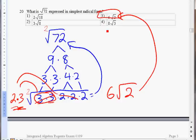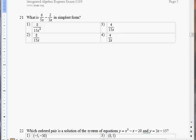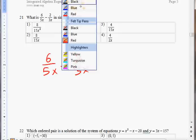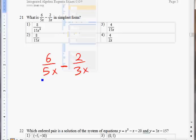Let's move on. Number 21. It says, what is 6 over 5x minus 2 over 3x in simplest form? So in order to do this, let's write it out here. 6 over 5x minus 2 over 3x. Before we subtract, we need to get a common denominator. That means the bottom number over here.